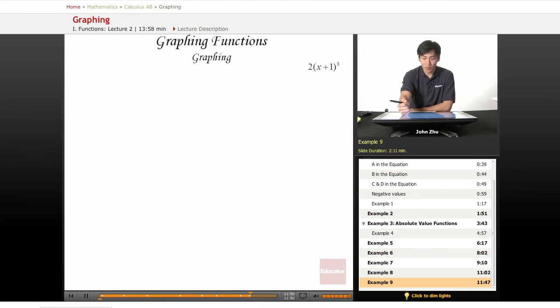For our final example, we're looking at this function. We notice that there's a cube term, so the original function is probably x cubed, and we have our constants here that will manipulate the graph.